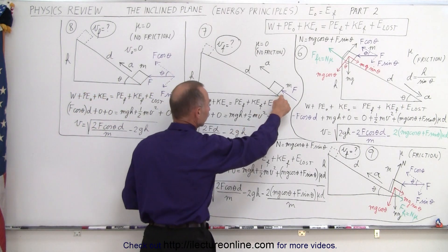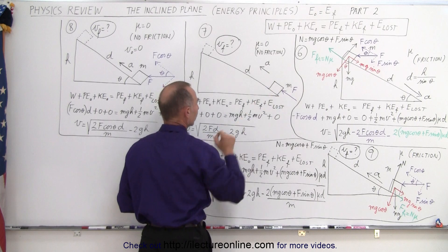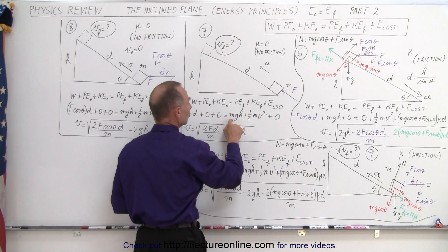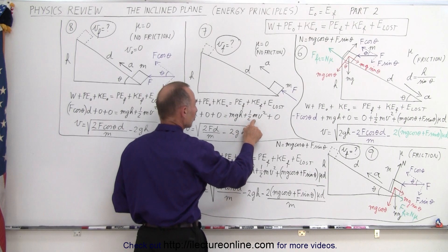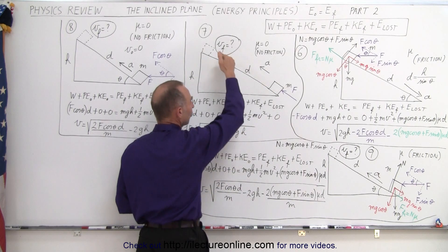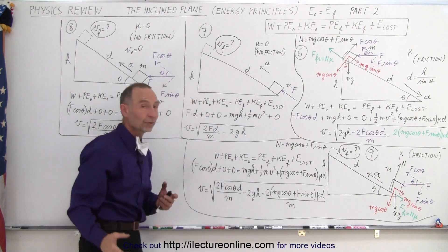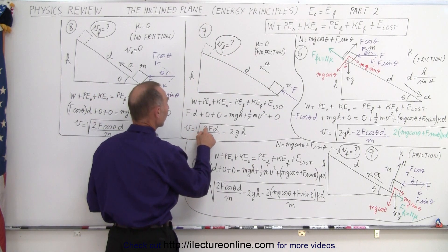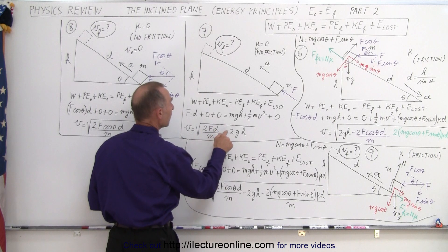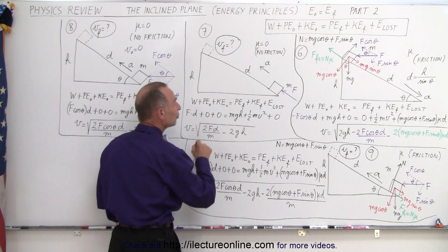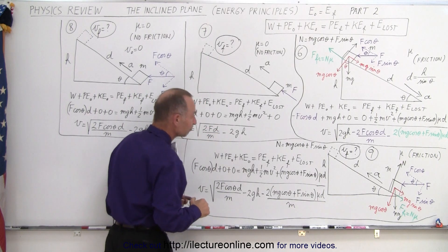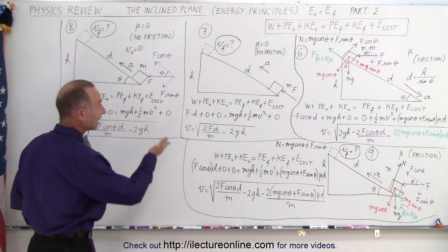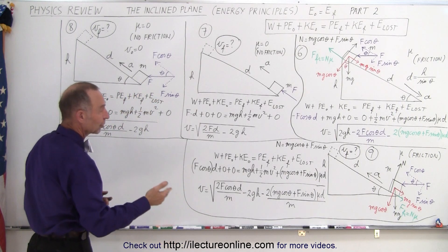We start at the bottom, so there's no potential energy, and we start at rest, so there's no kinetic energy. But at the end, when we reach height h, potential energy is mgh and kinetic energy is one-half mv squared. Since there's no friction, there's no energy lost. The velocity will be equal to the square root of 2fd divided by m, minus 2gh. We still see the 2gh term, but now it's subtracted because we have to gain potential energy instead of losing it.